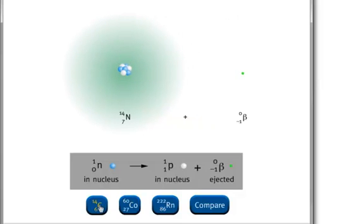called a beta particle, is then ejected from the nucleus, producing nitrogen-14. A nitrogen-14 nucleus is stable. Thus, no further radioactive decay occurs.